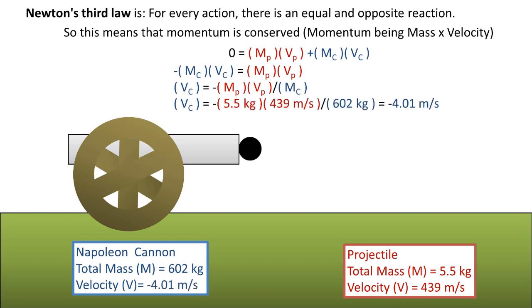After plugging in all of our numbers, we are left with the velocity of the cannon after being fired of 4.01 meters per second.